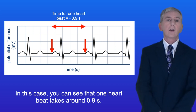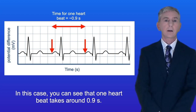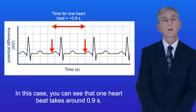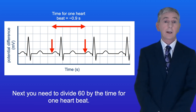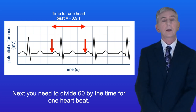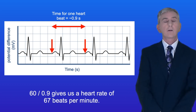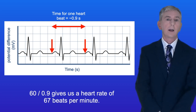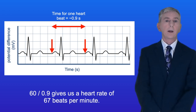In this case you can see that one heartbeat takes around 0.9 seconds. Next you need to divide 60 by the time for one heartbeat. 60 divided by 0.9 gives us a heart rate of 67 beats per minute.